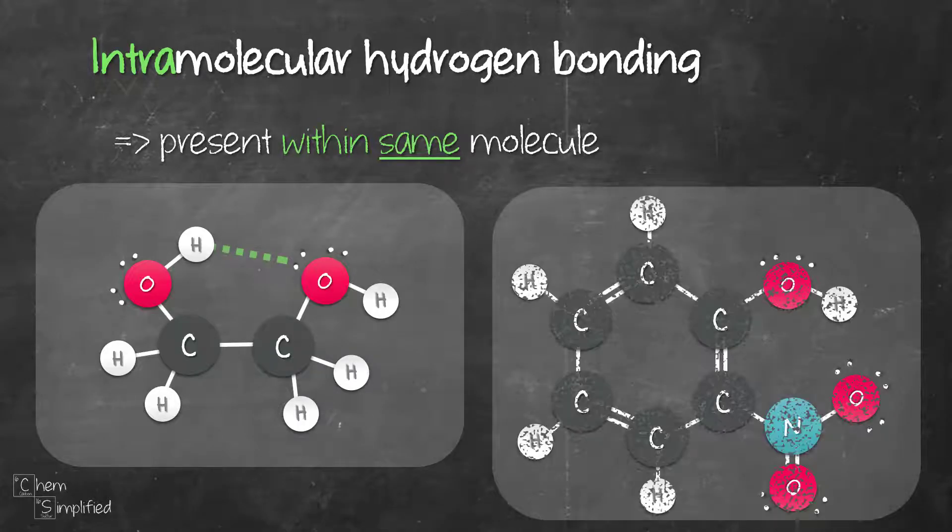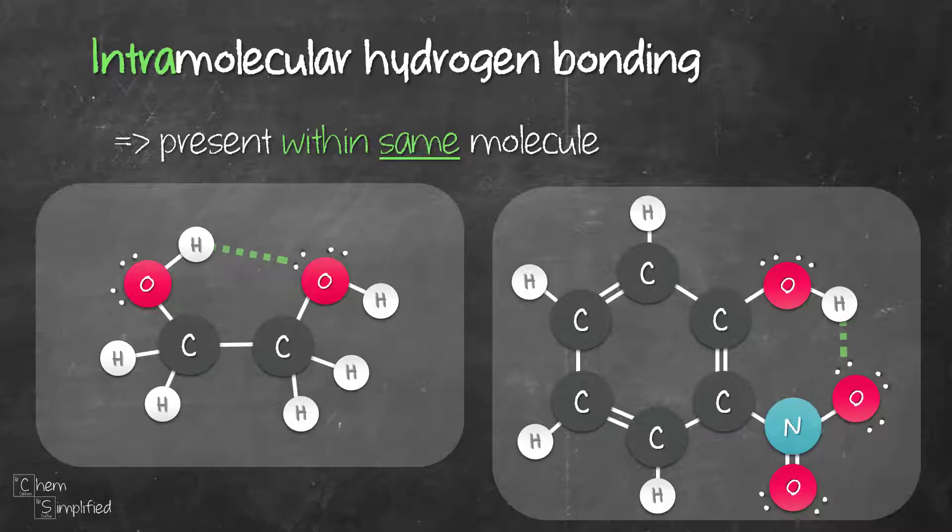Here's another example of intramolecular hydrogen bonding. Notice the attraction between hydrogen and oxygen happens within the same molecule. Of course, these bonds have to be close to one another for that attraction to happen. This is what intramolecular hydrogen bonding is about: attraction that happens within the same molecule.